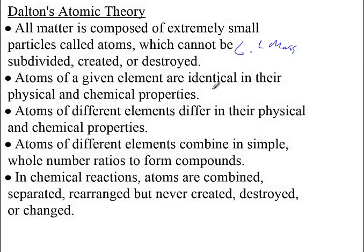He said that all atoms of the same element are exactly the same and identical in their chemical properties, but atoms of different elements are different in their chemical properties. He also said that when atoms combine, they're going to combine in simple whole number ratios, which is kind of why when you think about water — H2O — we've got two hydrogens and one oxygen.